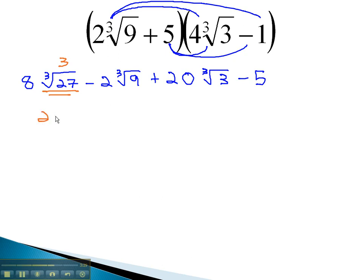We now have 24, with no radical remaining, minus 2, times the cube root of 9, plus 20, times the cube root of 3, minus 5.